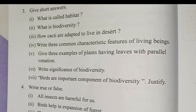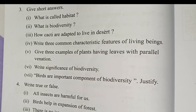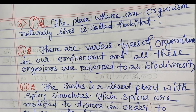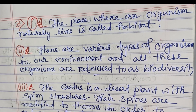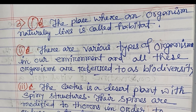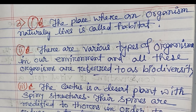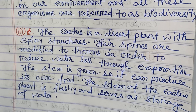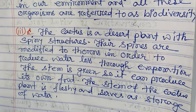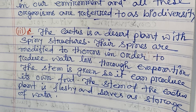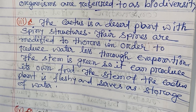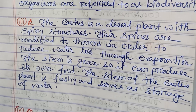Number three: How are cactus adapted to live in the desert? The cactus is a desert plant with a spiny structure. Their spines are modified thorns in order to reduce water loss through evaporation. The stem is green so it can produce its own food. The stem of the cactus plant is fleshy and serves as storage of water.